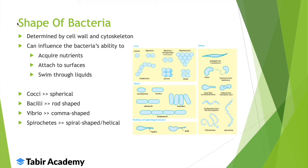The shape of bacteria can vary widely. Shape is determined by the cell wall and cytoskeleton. Different shapes cause bacteria to act in different ways — acquiring nutrients differently, attaching to surfaces differently, and swimming through liquids differently.